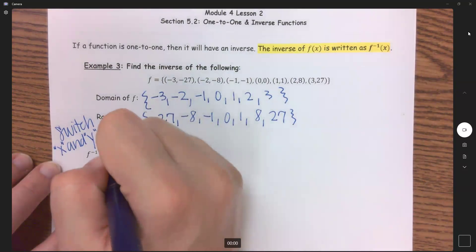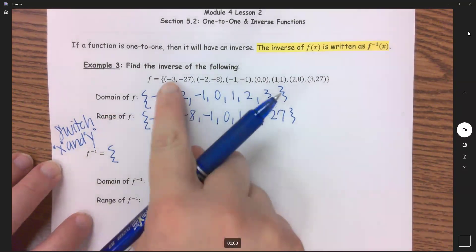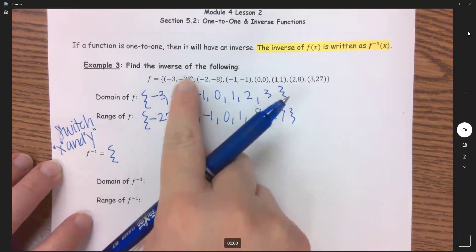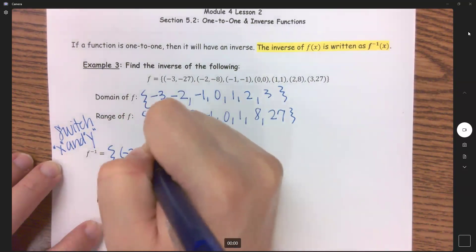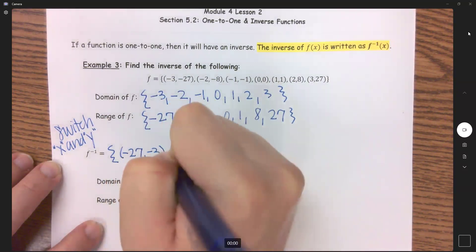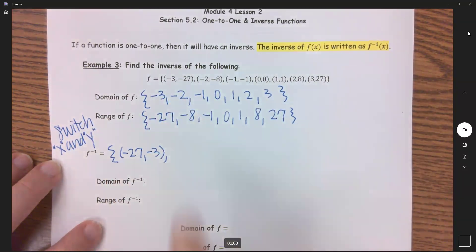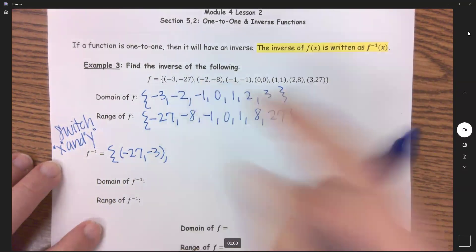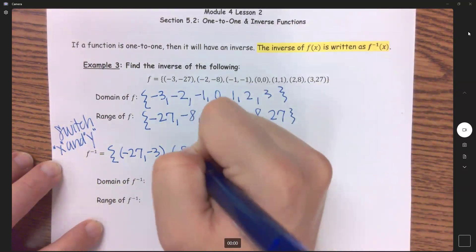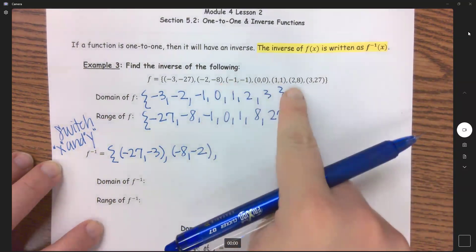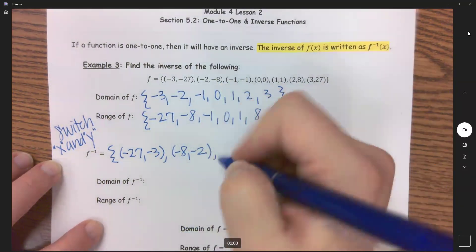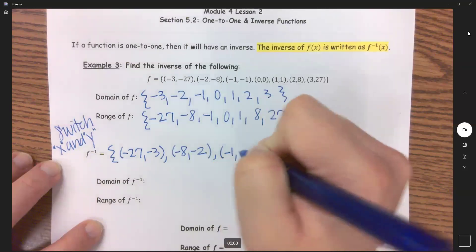So now with squiggly fancy brackets, this coordinate here, instead of being negative 3, negative 27 is now negative 27, negative 3. Instead of negative 2, negative 8, now it is negative 8, negative 2, and then so on. These next three, when you switch the x and y coordinate, because they're the same, they don't change.